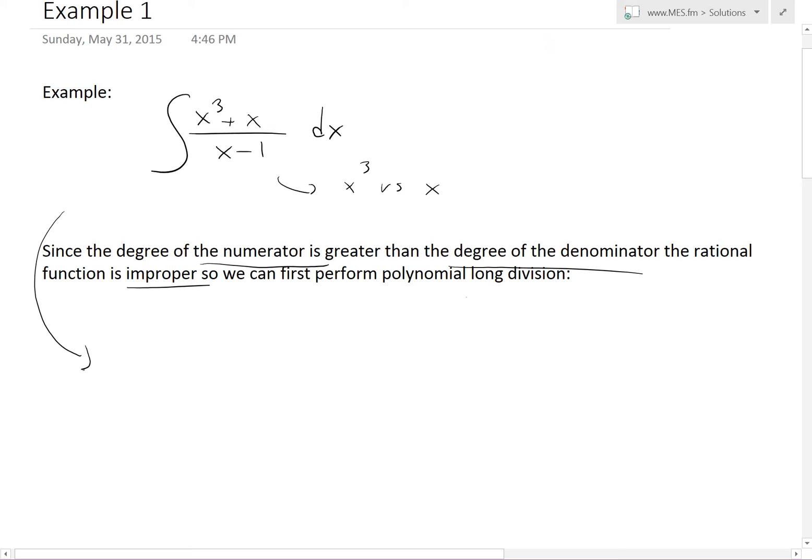Using polynomial long division (see my earlier video on this method), we have x - 1 divided into x³ + x. Since there's no x² term, we write x³ + 0x² + x.